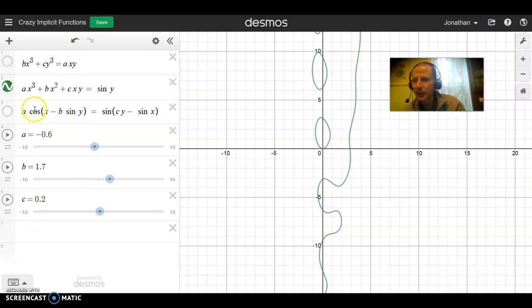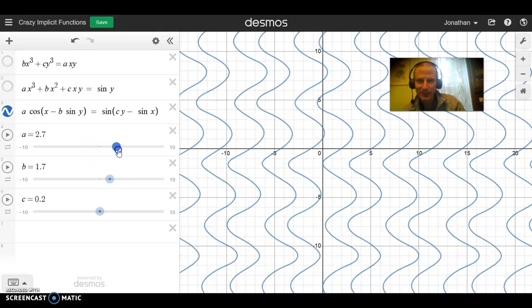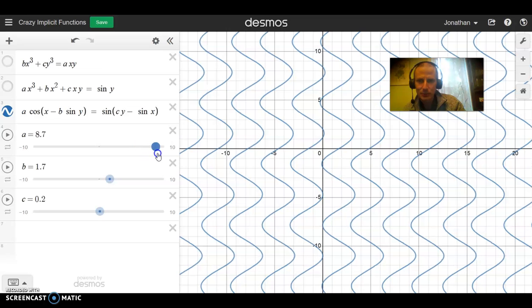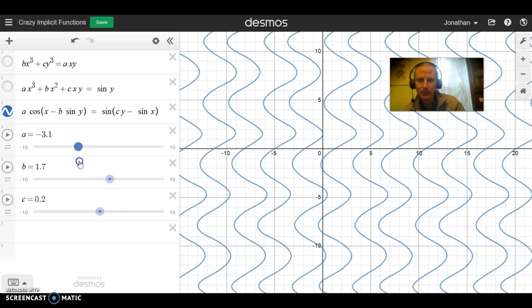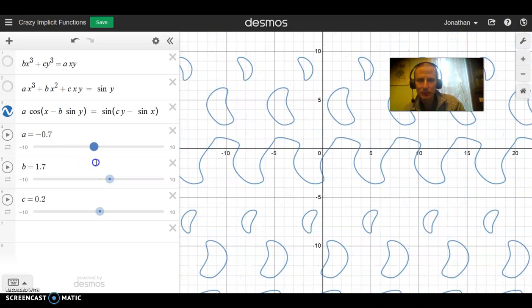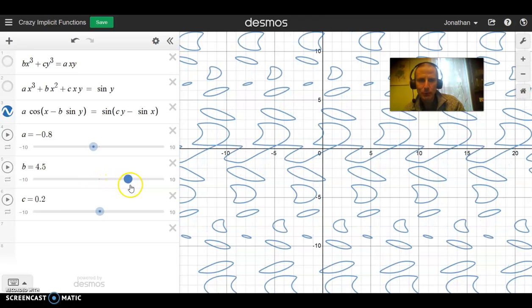Now this next one I got out of the book, where it had a and b just being one. But you get something truly amazing when you take a cosine of x minus b sine y and set that equal to sine of cy minus sine x for various values of a, b, and c. And then as we move the sliders around, we can look at all the crazy things that happen. These loops appear to be somewhat parallel, sort of like sine waves, but as a gets smaller, well, when a is close to zero, we get the most interesting behavior.